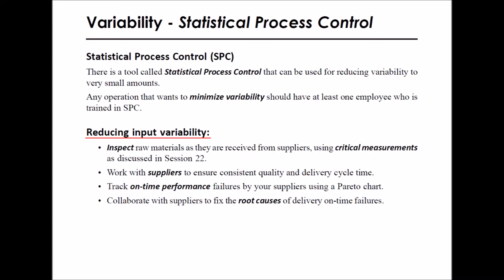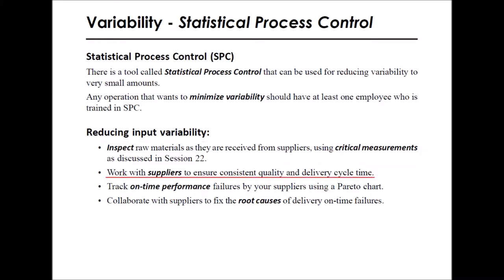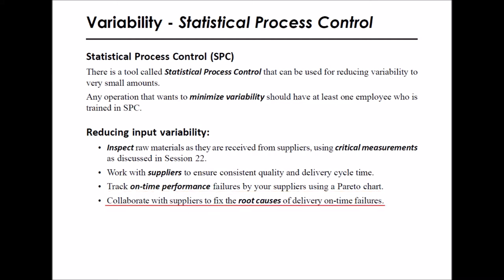Let's talk briefly about reducing input variability. To reduce input variability, inspect raw materials as they are received from suppliers using critical measurements as discussed in session 22. Work with your suppliers to ensure consistent quality and delivery cycle time. Track on-time performance failures by your suppliers using a Pareto chart. Share the Pareto chart with your suppliers and collaborate with them to fix the root causes of delivery on-time failures.